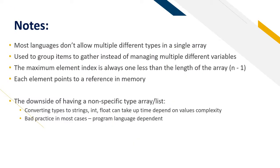Most languages don't allow multiple different types in a single array. This mostly applies to statically typed languages like the C language for example. It's used to group items together instead of managing multiple different types of variables and this is good for management. The maximum element index is always one less than the length of the array. So remember the algebra equation n minus 1 where n is the length of the array.